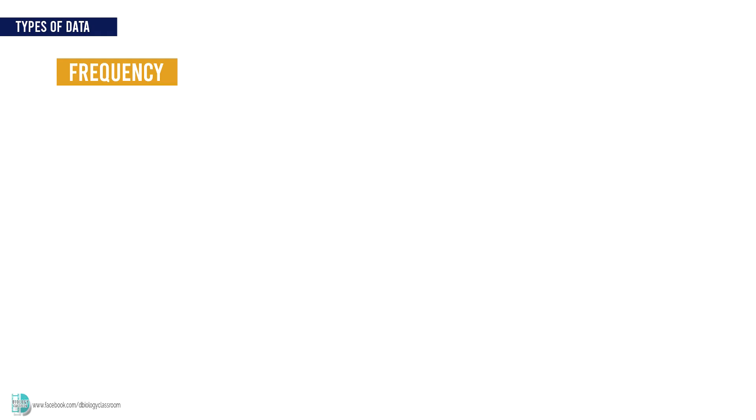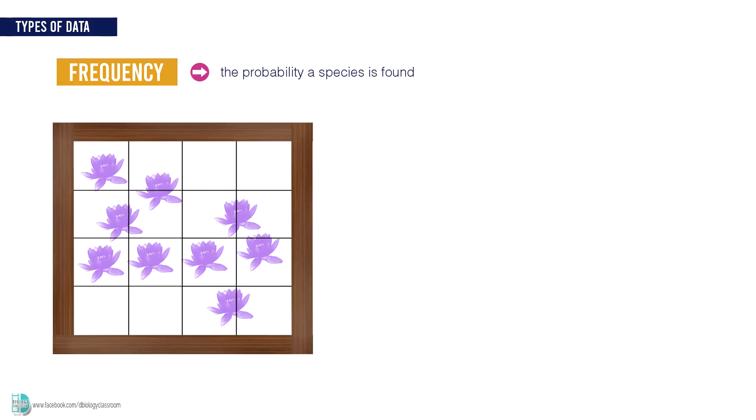The third one is frequency. Frequency is the probability of a species being found. It is calculated by number of small squares the species is found divided by the total number of the small squares.